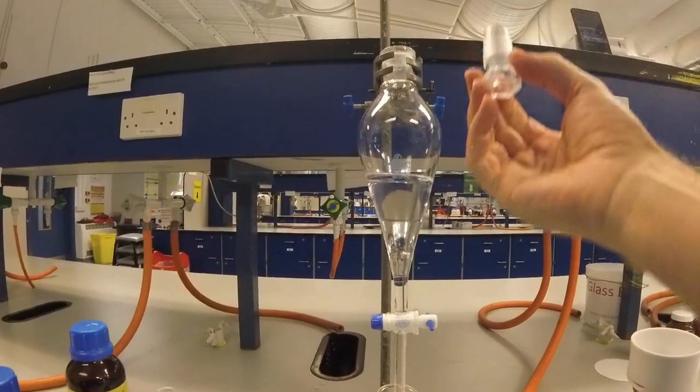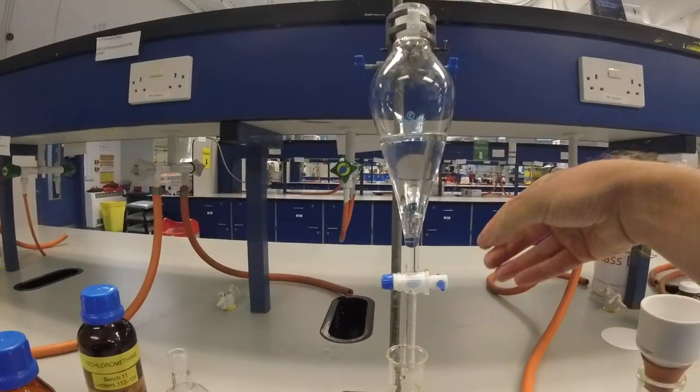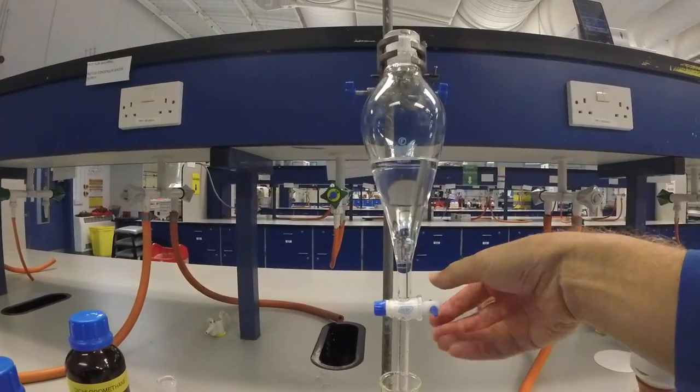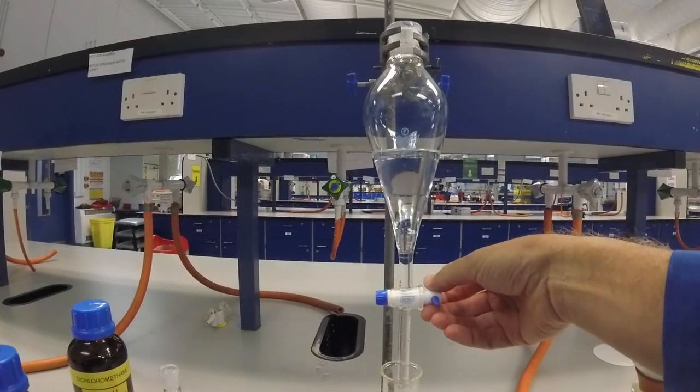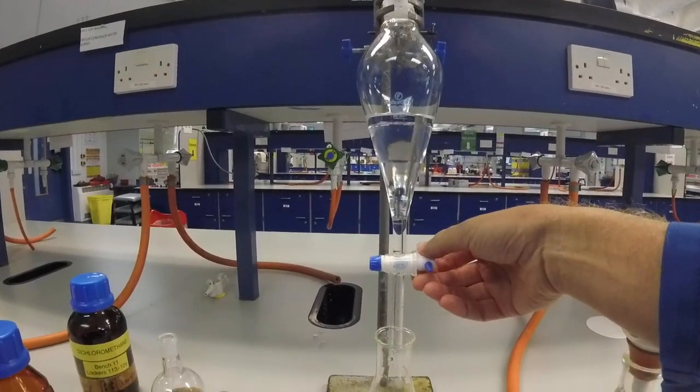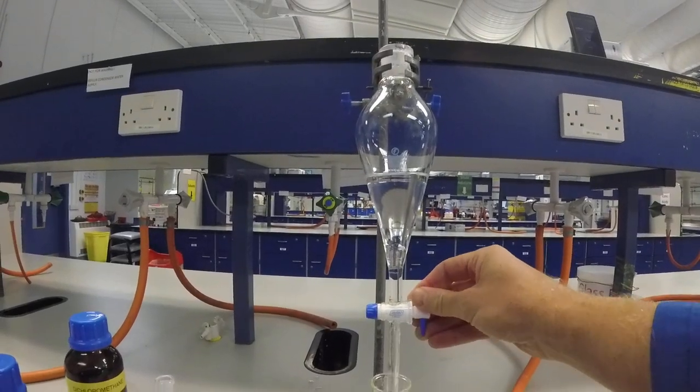Other important thing is make sure you take the stopper out. A number of people leave the stopper in and then when they come to open the tap they can't work out why anything's running out of the separating funnel. They think the separating funnel's broken. So now we then open and you'll see the layer moving down.